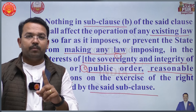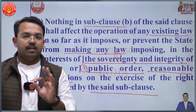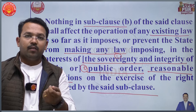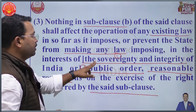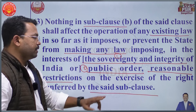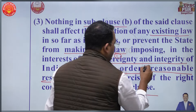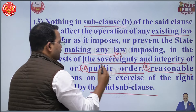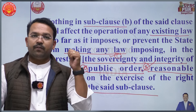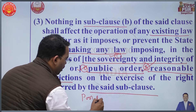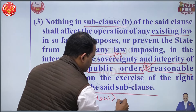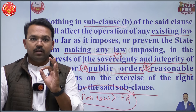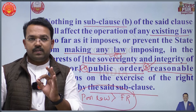The first sub-clause B of Article 19 gives freedom of assembly, which must be peaceful and without arms. If a fundamental law is already in existence, a new law can be made for protecting the sovereignty and integrity of India. This parliamentary law will have upper hand over this fundamental right. Basically, these three points are restrictions upon the fundamental right to assemble in a peaceable manner without arms.